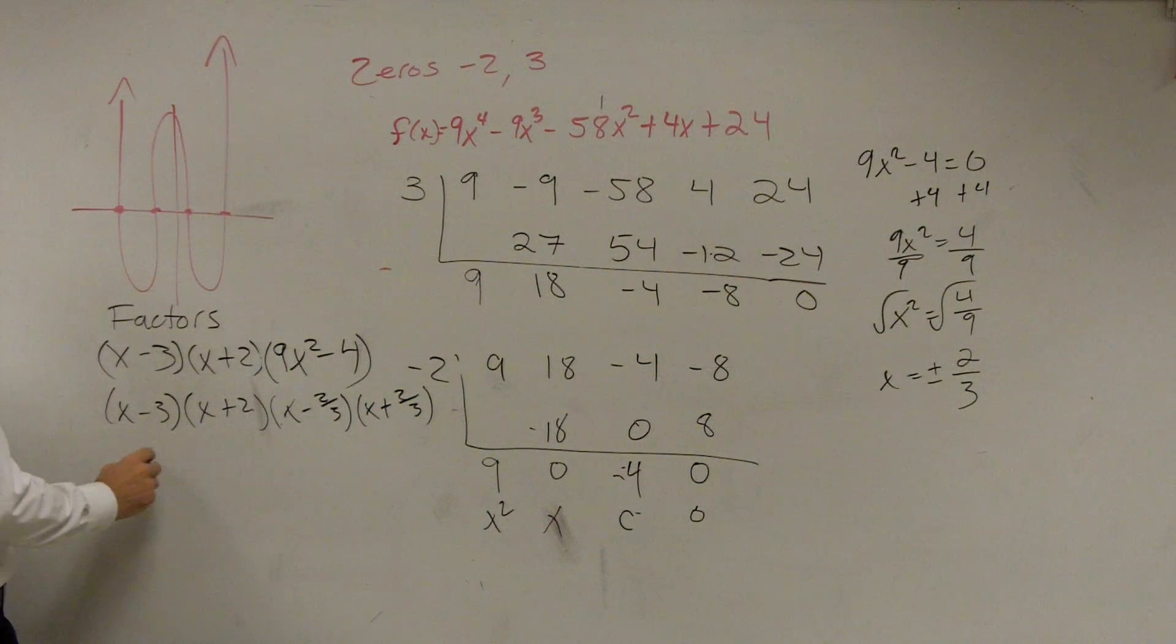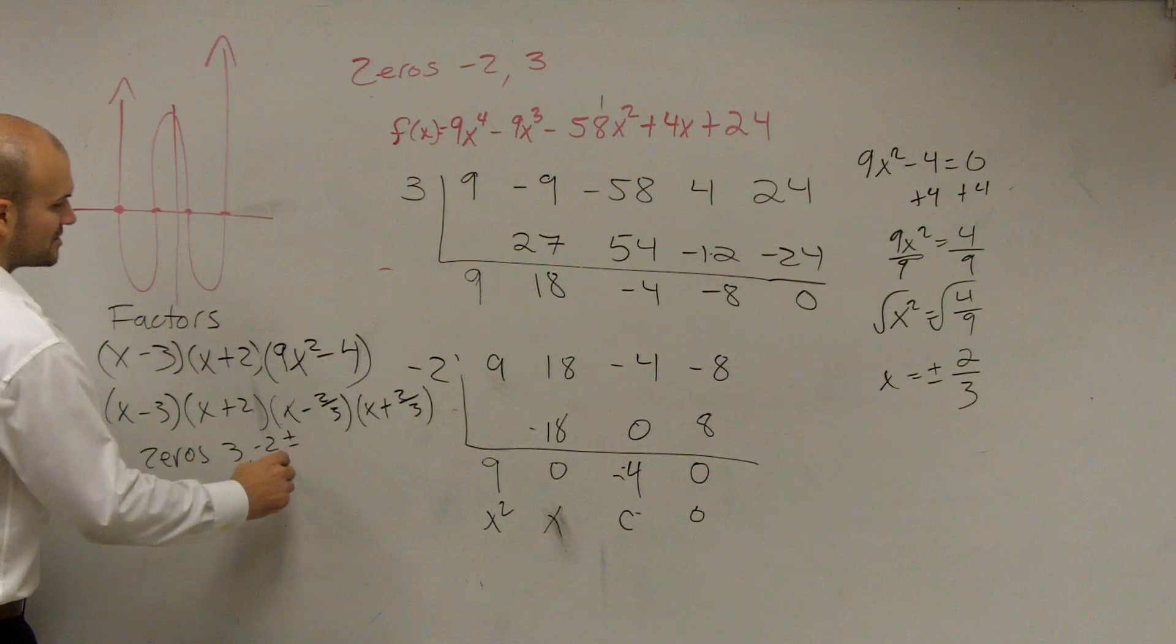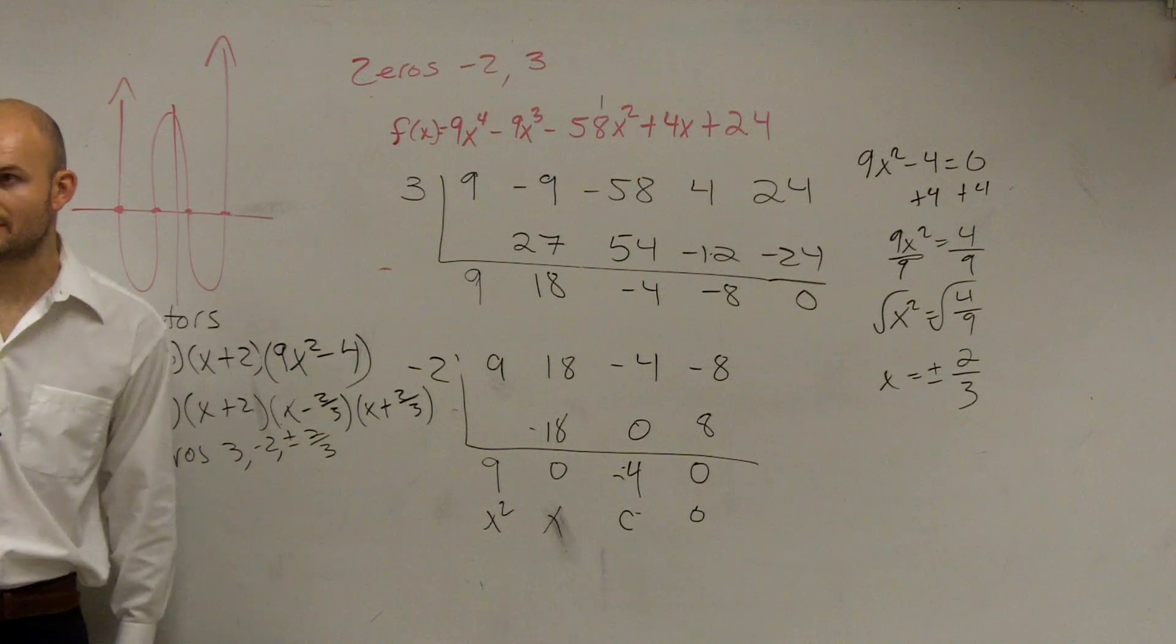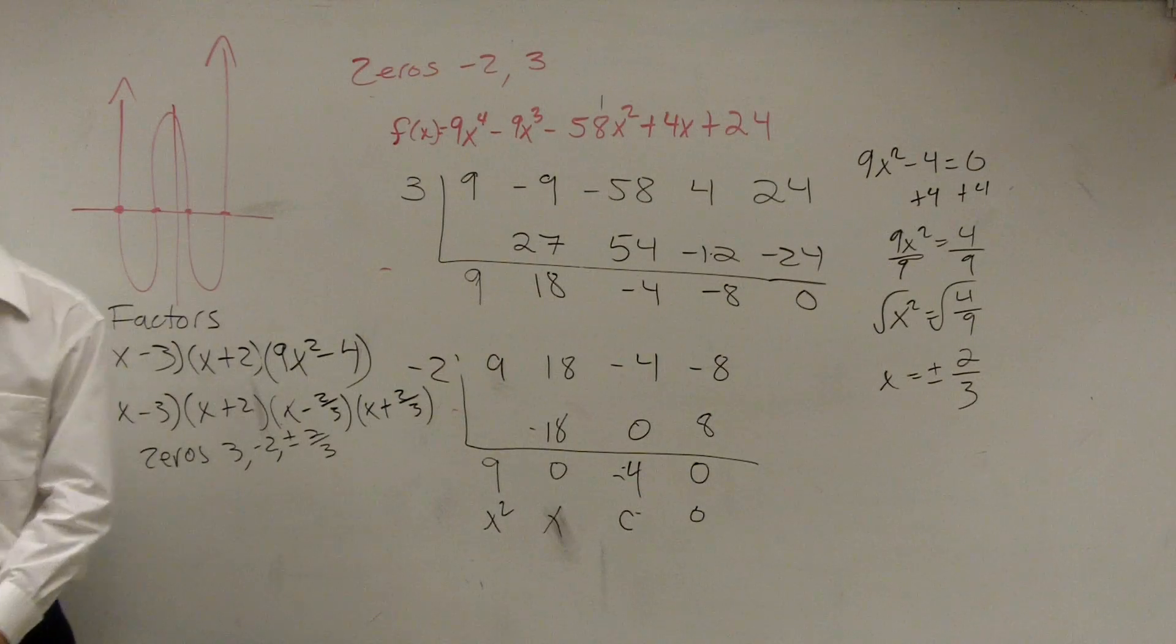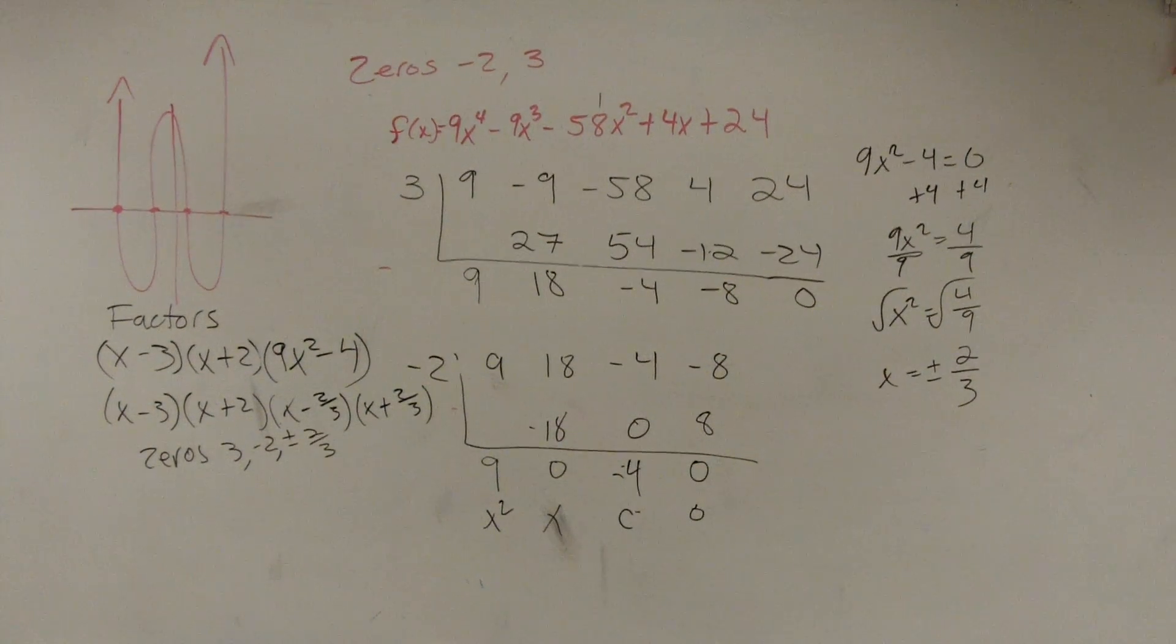Then we can write the zeros, because that's what I was asking, are going to be 3, negative 2, and plus or minus 2 thirds. Any questions on that? Does that make sense? Sorry. Thank you for calling me out on that. We're good? Yes. Okay. So ladies and gentlemen, that's what you...